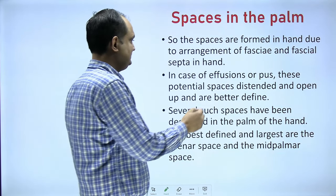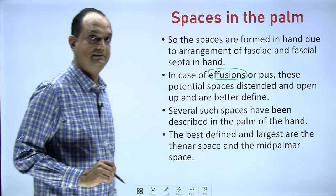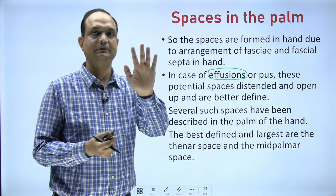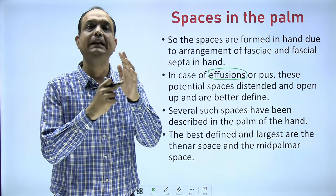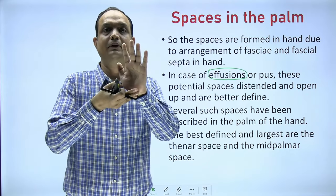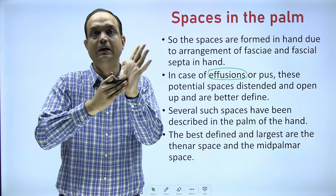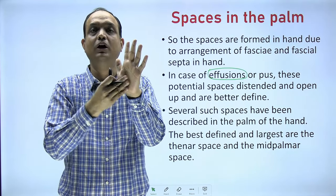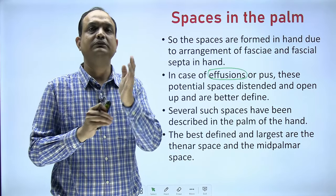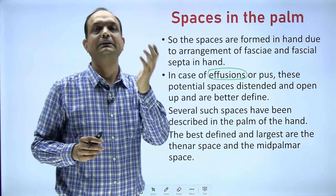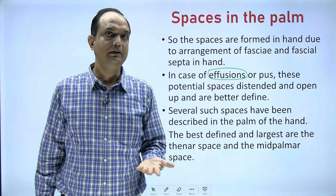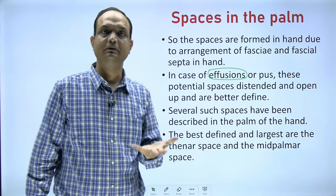These spaces become visible or prominent when there is a collection of fluid or pus — the potential spaces distend and open up. In a normal person pressing on the palm you will not find any space, but when there is pus formation or fluid collection, swellings appear. The normal concavity of the palm is lost and the hand shows elevation or convexity because pus collects deep to the long flexor tendons. The most prominent of these are the mid palmar space and the thenar space.